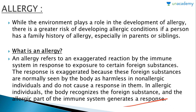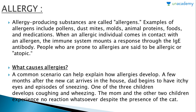Allergy-producing substances are called allergens. Examples of allergens include pollens, dust mites, molds, animal proteins, foods, and medications. When an allergic individual comes in contact with an allergen, the immune system mounts a response through the IgE antibody. People who are prone to allergies are said to be allergic or atopic.